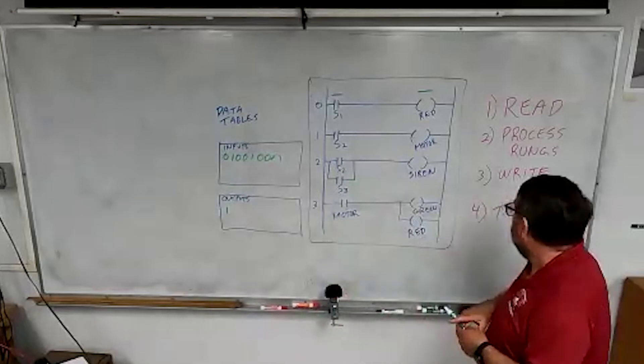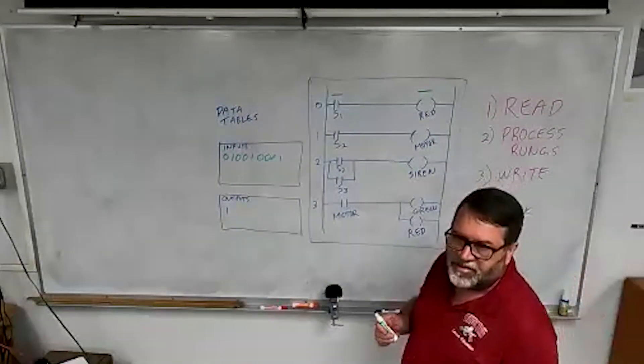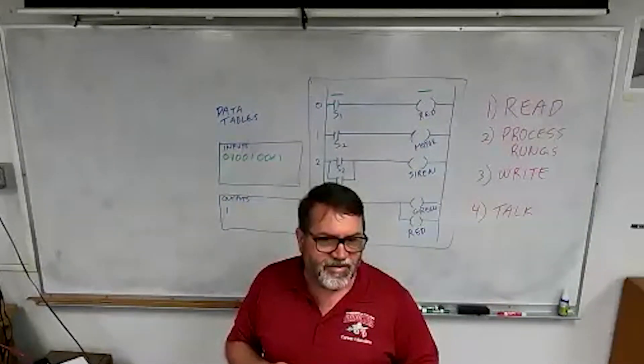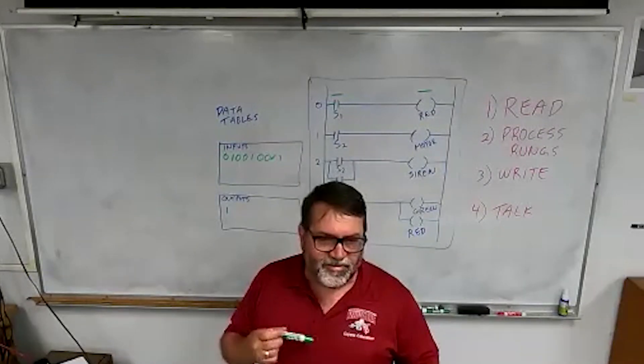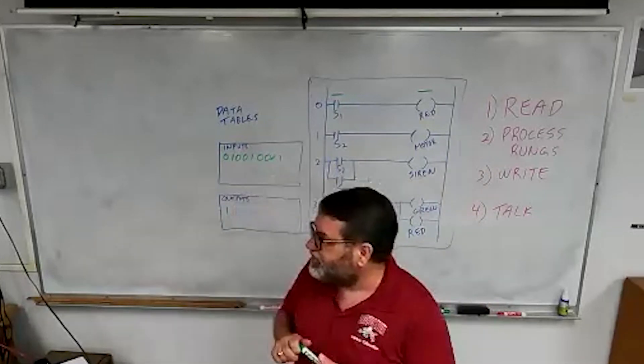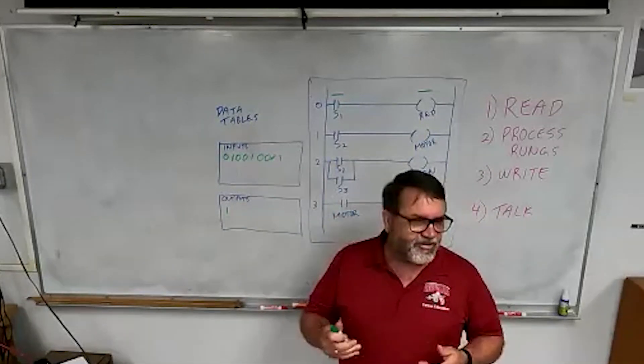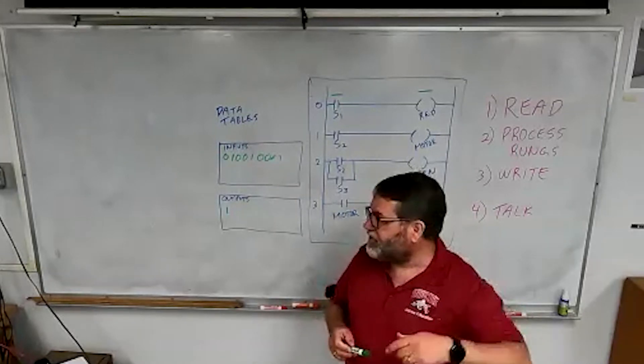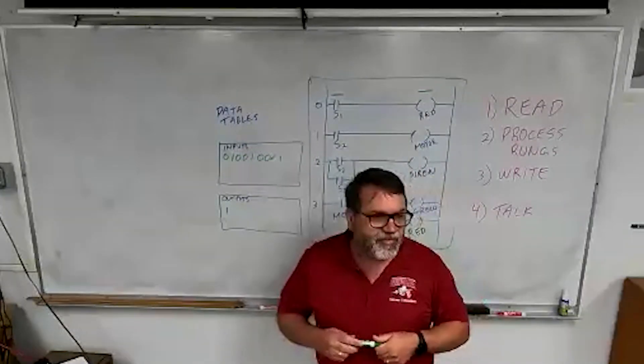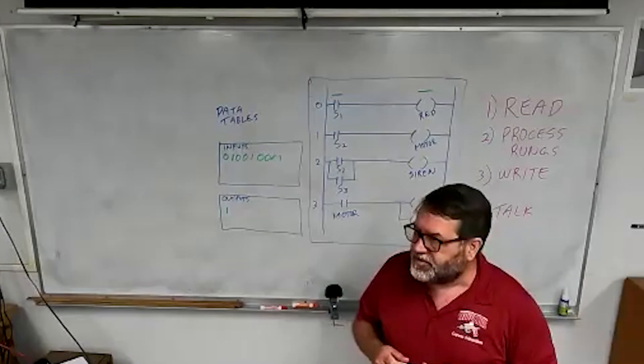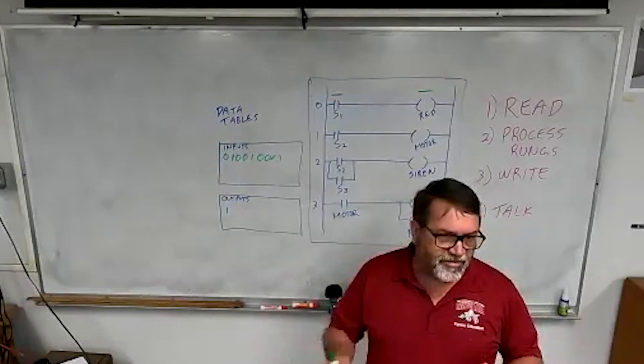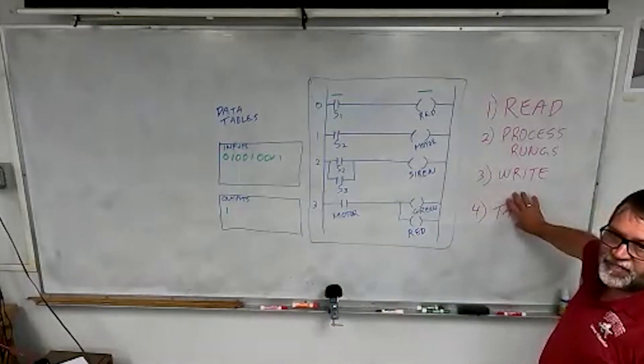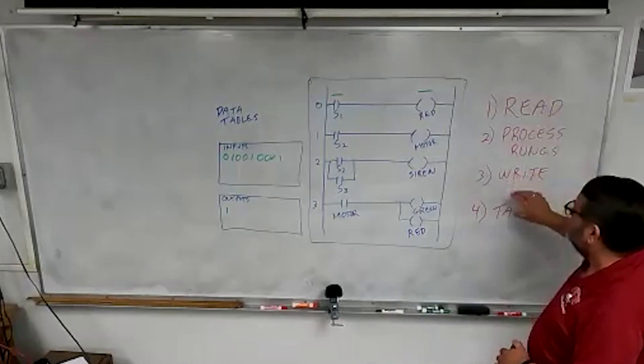And then finally, in step four, it does talking. What do you think a PLC talks to? No, the trainer's part of this real world writing. What does PLC socialize with? Who's in their social network? The computer? How about those touch screens on the wall? So it would talk to a touch screen, and it would maybe talk to another PLC. They sometimes talk to each other. So it's going to do all the socializing here in step four, and it has to do all these things in sequence.